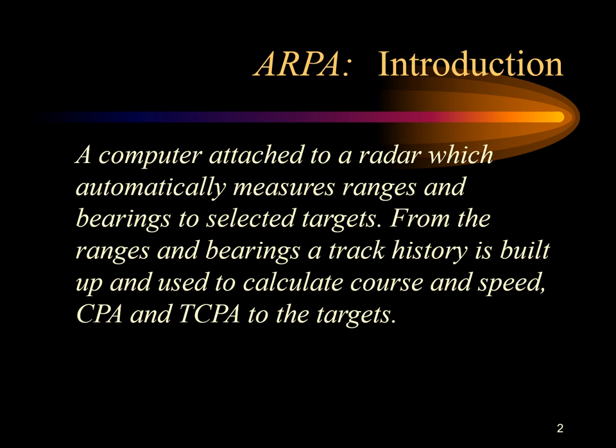ARPA is simply a computer system attached to a marine radar that can automatically measure the ranges and bearings to selected targets or those targets within specific defined areas. From a series of ranges and bearings, a track history can be formed which enables calculation of true track, speed, CPA, and TCPA. CPA is the closest point of approach and TCPA stands for time to the closest point of approach.